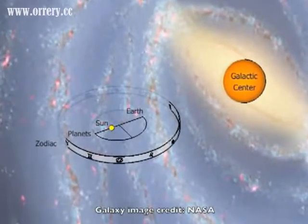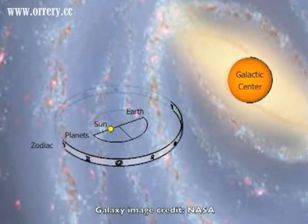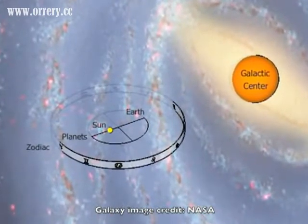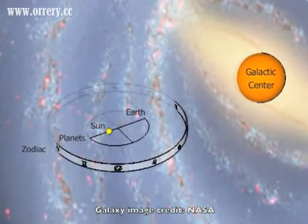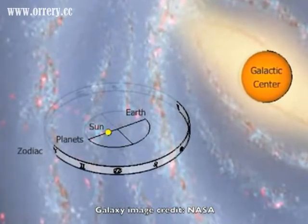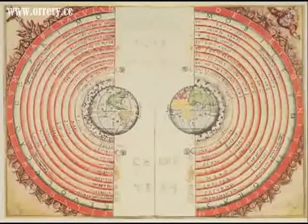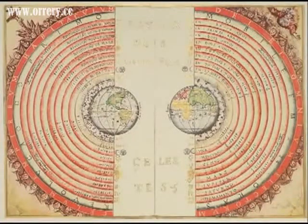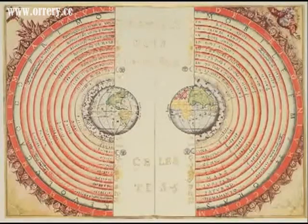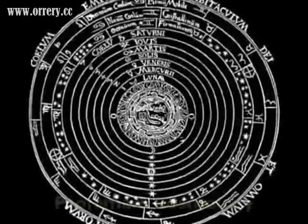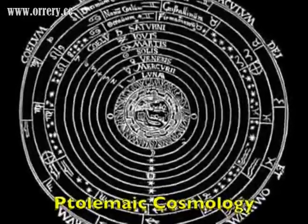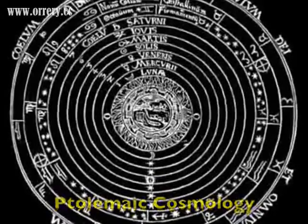Imagine beginning a journey outside the galaxy, flying through the zodiac, passing by each one of the visible planets, and stopping on Earth for a while. After a short stay, you begin the journey home, traveling out past the planets, through the zodiac, and on toward the center of the galaxy. This route describes the mystical journey of the soul. It is mirrored in the Ptolemaic or geocentric cosmology that predated Copernicanism.